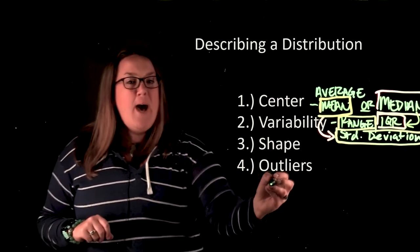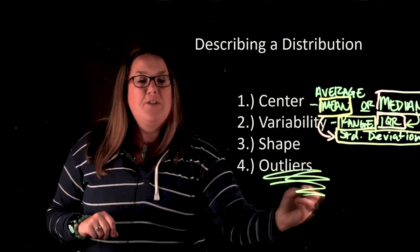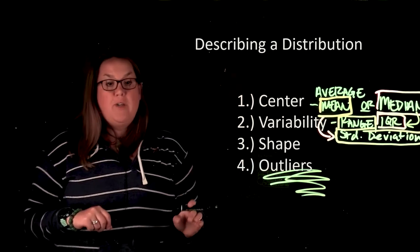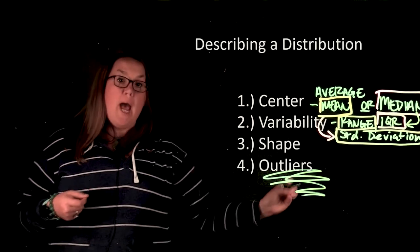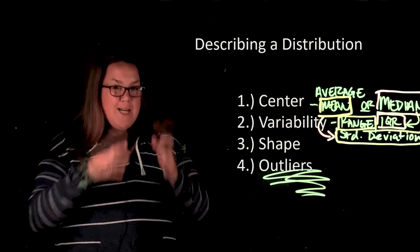Essentially, if you have outliers present, and outliers are values that stray far away from the bulk of the data, if they're creating skewness, so a drag or a pull where that data isn't symmetric...